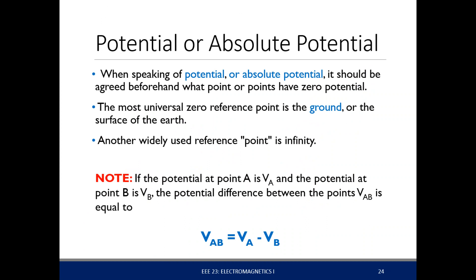Now let's define what we call the absolute potential. What I mentioned earlier is the potential difference; we also have what we call an absolute potential. When speaking of absolute potential, it should be agreed beforehand what point should have zero potential. The most universal zero reference point is the ground, or the surface of the earth, and another one widely used is the point at infinity. This came from a mechanical analogy: a ball of mass M resting on the ground has zero potential.